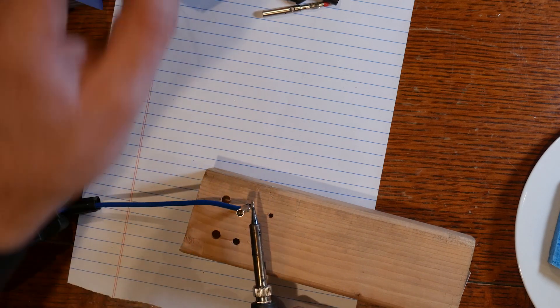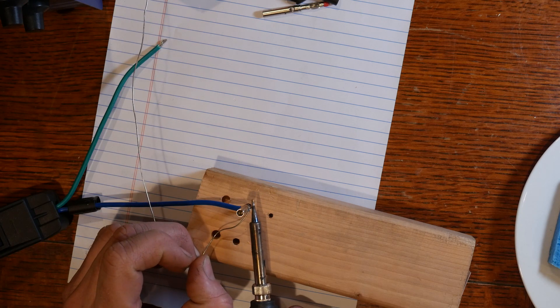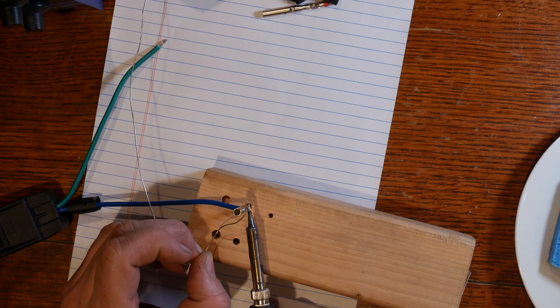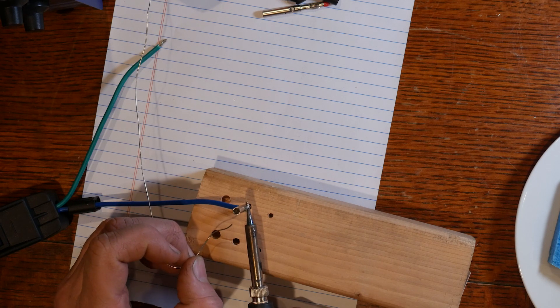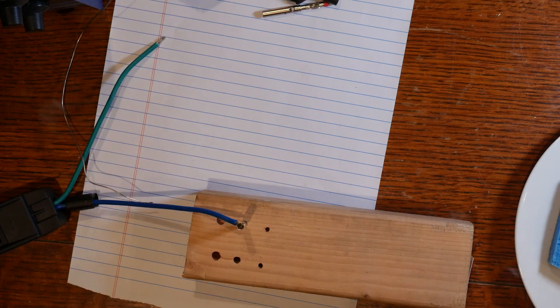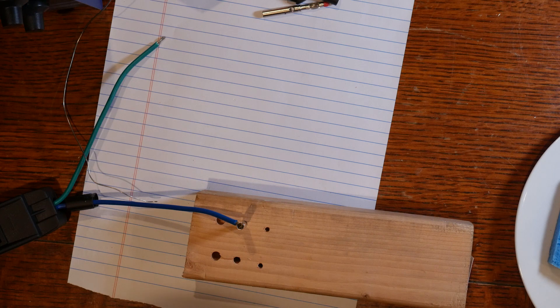Might need just a touch more solder to seal up the rest of that opening. We probably don't really need it, but just to make sure as this connector gets moved around it doesn't start to wiggle and break the solder joint. We'll add a little bit more in there. We'll let cool off for a second and then we'll finish assembling it.